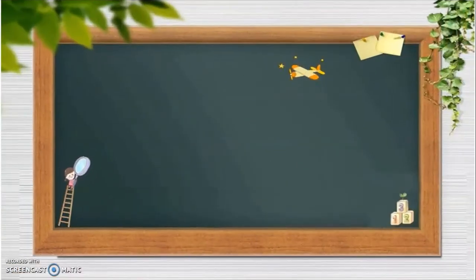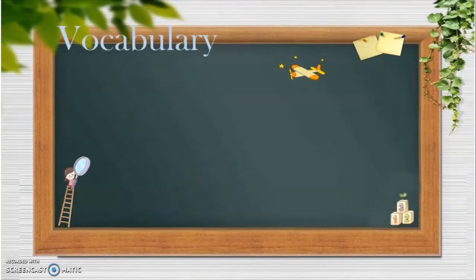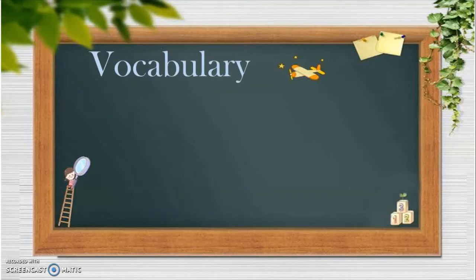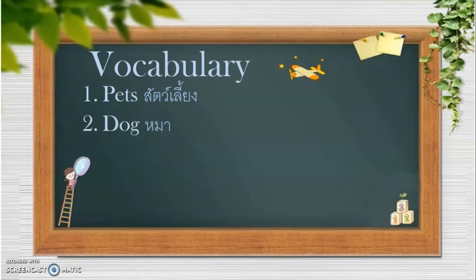Now, before we start our topic, I want you to read again the vocabulary. Again, vocabulary. Alright. Number one, pet. Pet. Number two, dog. Dog. Number three, cat. Cat.